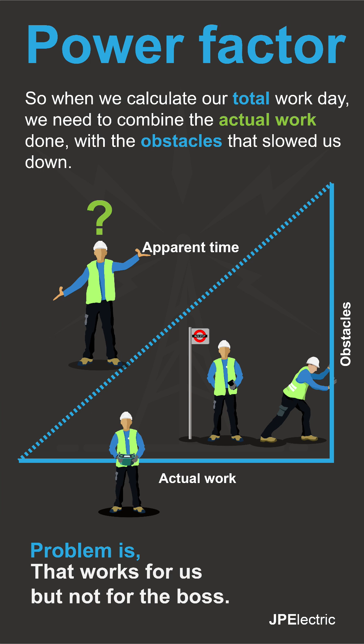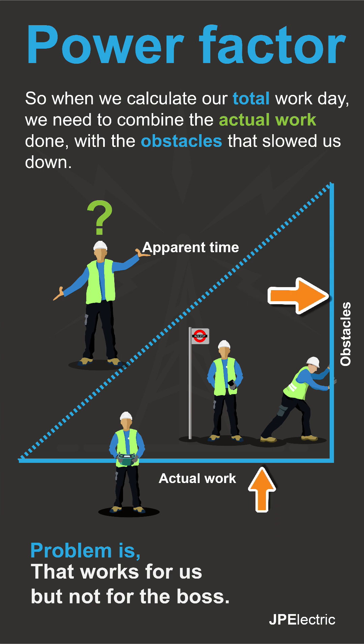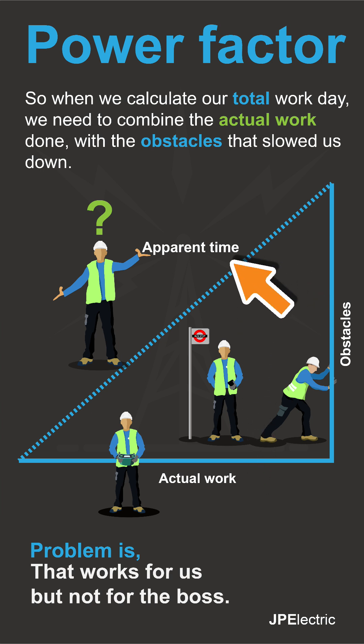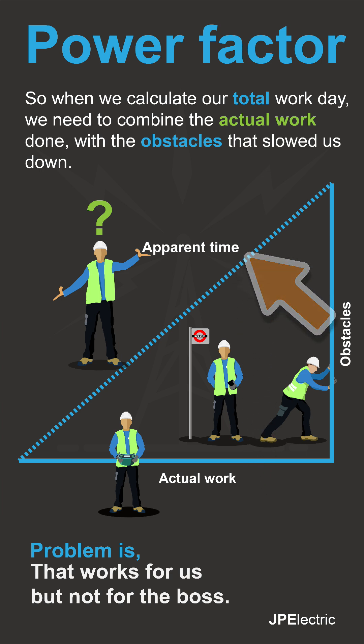When we come to calculate the total workday, we need to combine the two: the actual work we've done and the obstacles that have gotten in our way. We would like to be paid for that time — this would be our apparent time at work.